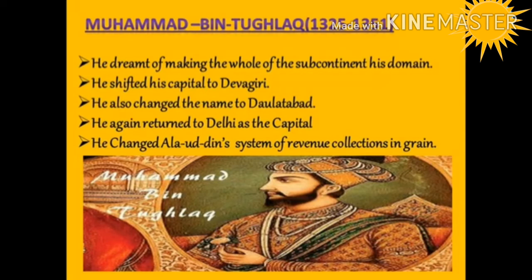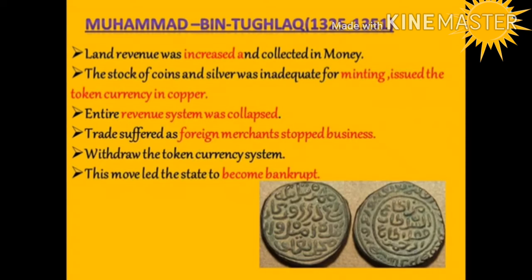Muhammad bin Tughluq was a learned man, yet a person of cruelty. He dreamt of making the whole subcontinent his domain. With this view, he shifted his capital from Delhi to the centre of the kingdom, namely Devagiri, renaming it Daulatabad. When he decided the move was a mistake, he ordered a return to Delhi. He also changed Alauddin's system of revenue collection and increased land revenue collected in money, which proved disastrous during famines.